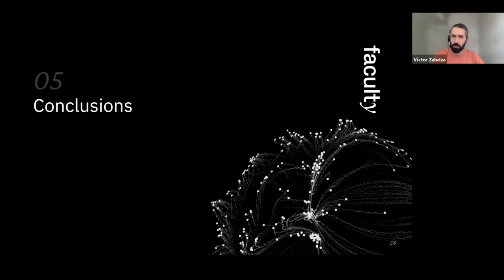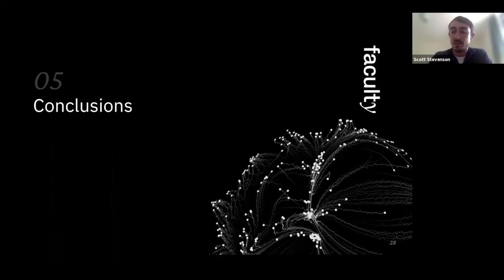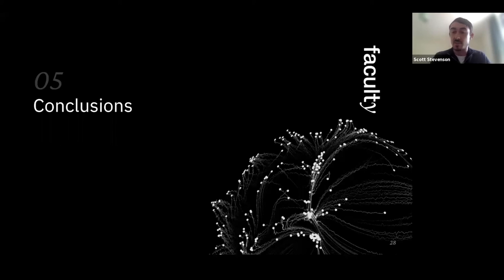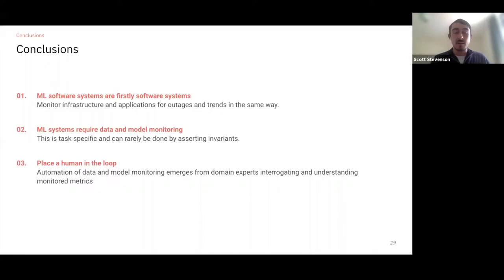For our conclusions, we've tried to distill three main takeaways. First: ML systems are first and foremost software systems, so make sure you're covering all the fundamentals — infrastructure and application monitoring — that you would for other applications. Second: on top of that, there are additional monitoring requirements for data and the model. These need to be thought about differently from infrastructure monitoring because they're much harder to monitor via simple invariants or thresholds — you need to look at distributions and spend time with a deployed system to understand how those distributions evolve and where to set thresholds.